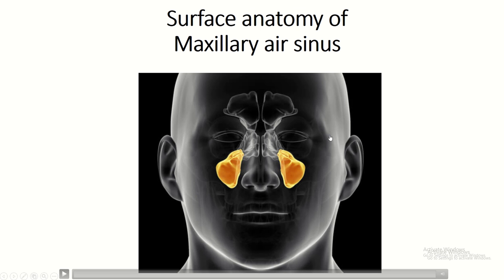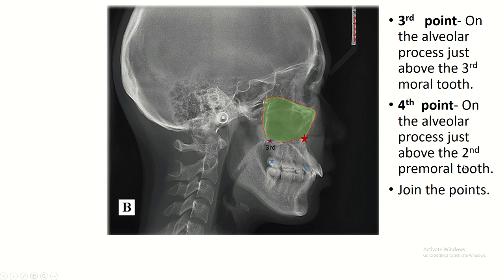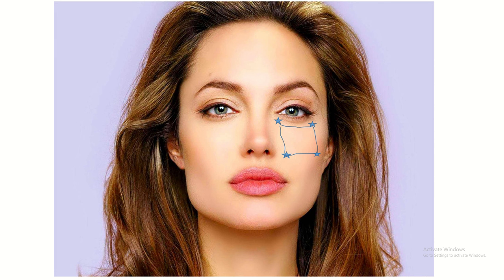Surface anatomy of the maxillary air sinus. The first point is the medial end of the infraorbital margin. The second point is the lateral end of the infraorbital margin. The third point is on the alveolar process just above the third molar tooth. The fourth point is on the alveolar process just above the second premolar tooth. Join the first, second, third, and fourth points — this outlines the location of the maxillary air sinus.